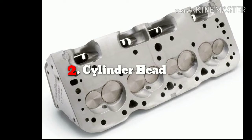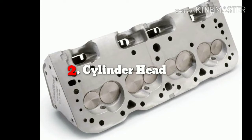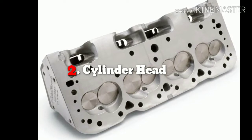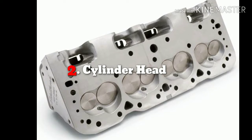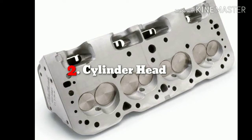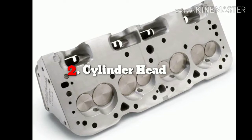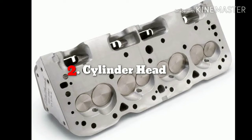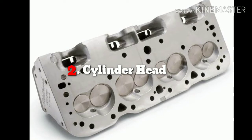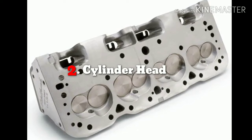The second part is the cylinder head. In an internal combustion engine, the cylinder head sits above the cylinder on top of the cylinder block. It closes in the top of the cylinder, forming the combustion chamber. This joint is sealed by a head gasket. In most engines, the head also provides space for passages that feed air and fuel to the cylinder and allow exhaust to escape. The head can also be used to mount the valves, spark plugs, and fuel injectors.